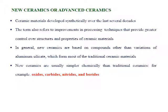The next category is new or advanced ceramics. These are ceramics developed synthetically over the last seven decades. The term also refers to improvements in processing techniques that provide greater control over the structure and properties of ceramic materials. New ceramics are based on compounds other than variations of aluminium silicate, which forms most traditional ceramic materials. They are usually simpler chemically, for example oxides, carbides, nitrides, and borides, and show better and improved characteristics compared to traditional ceramics.